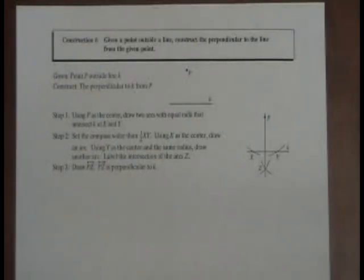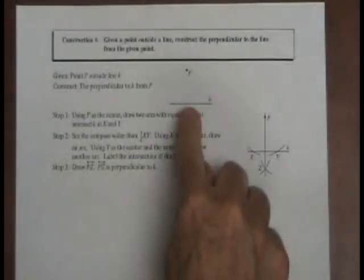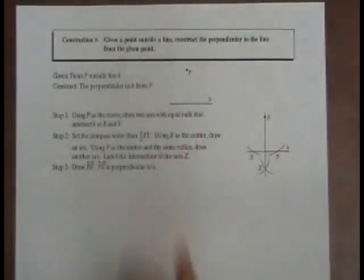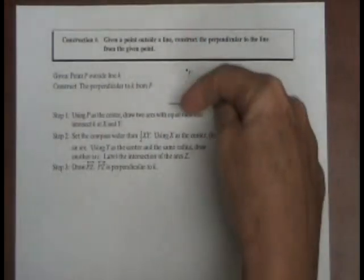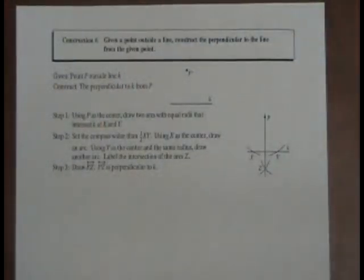This is Construction 6, which says: given a point outside a line, construct the perpendicular to the line from the given point. A minute ago we had a point that was on this line and we made a perpendicular from that point. Now our point is off of the line and that's what we're going to work with.